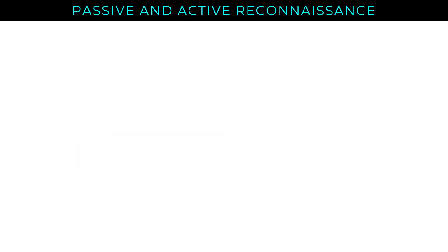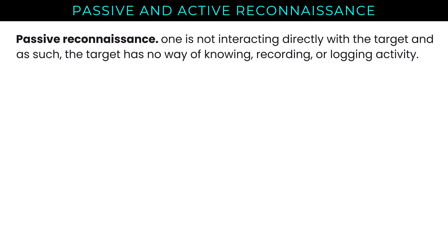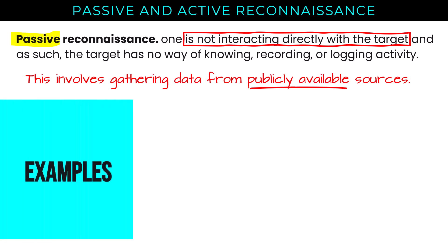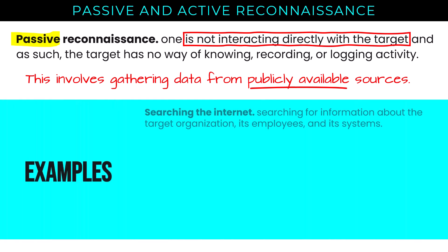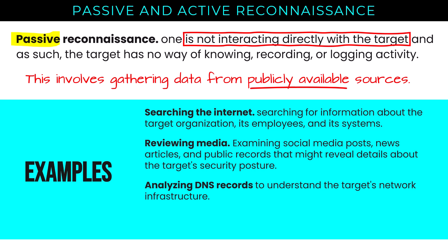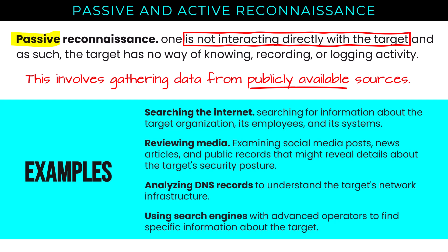In passive reconnaissance, we're not interacting directly with the target, so the target has no way of knowing, recording, or logging the activity. This involves gathering data from publicly available sources. Examples include searching the internet for information about the target organization, its employees, and its systems; reviewing social media posts, news articles, and public records; analyzing DNS records to understand the target's network infrastructure; and using search engines with advanced operators — known as Google dorking — to find specific information about the target.